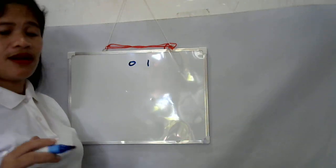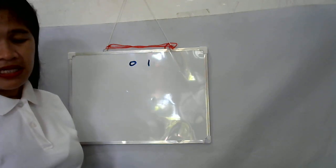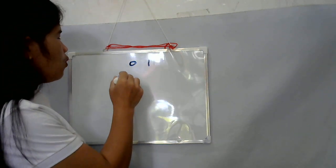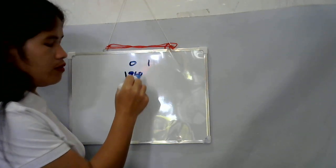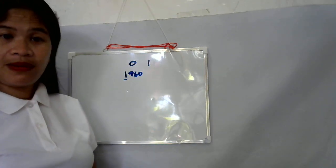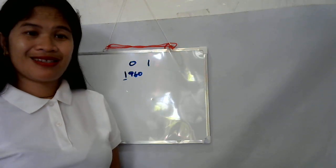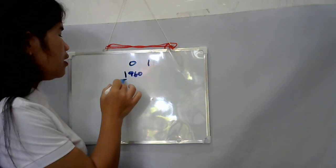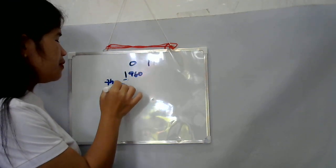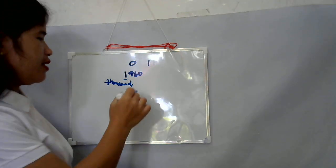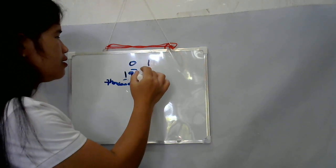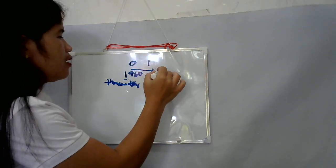First we're going to discuss the place value. For example, there is a four-digit number 1980. When we talk about place value, we talk about its allocation. One here is in the thousands place, nine is hundreds place, eight is tens place, and zero is ones.